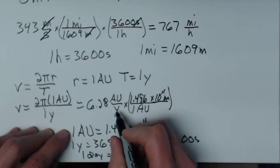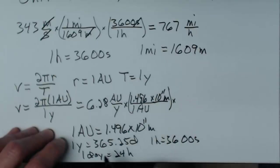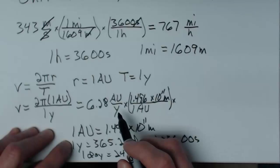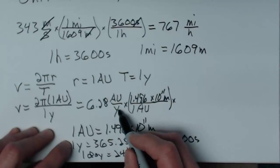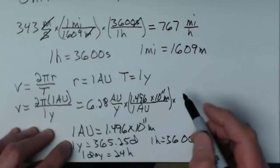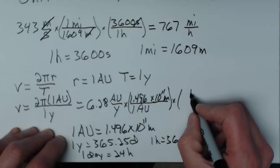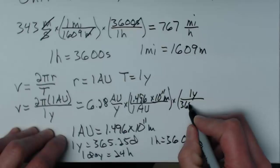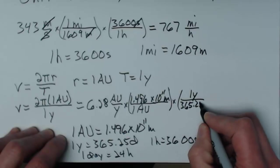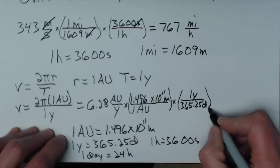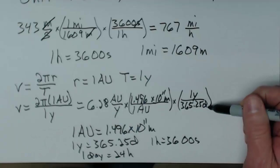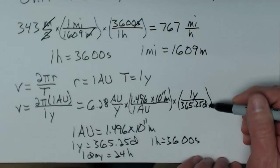All right, now I'd better start getting rid of the years. Well, 1 year is 365.25 days. Here the years are on the bottom of a fraction. I have to put them on the top. So 1 year on top, 365.25 days on the bottom. This is going to be a long conversion here. All right, well that gets rid of the years, but I need to get rid of those days now because I want seconds.